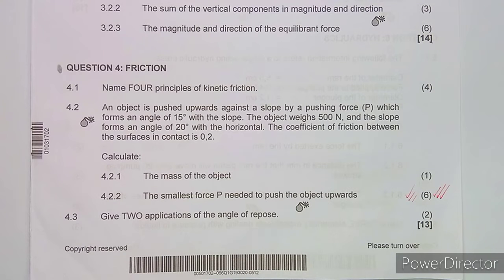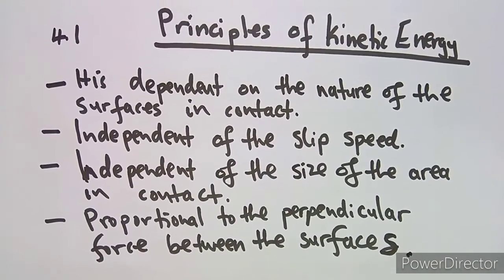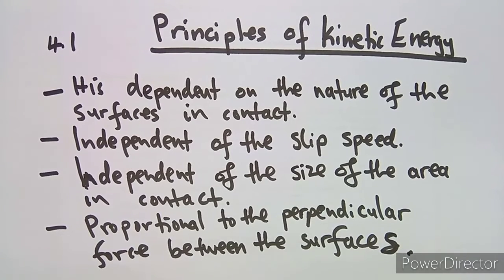Let us quickly go through the question. The first question was to name four principles of kinetic friction. Kinetic friction is dependent on the nature of the surfaces in contact; it is independent of slip speed; it is independent of the size of the area in contact; and it is proportional to the perpendicular force between the surfaces.